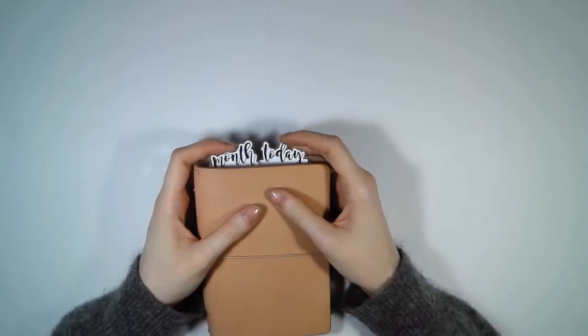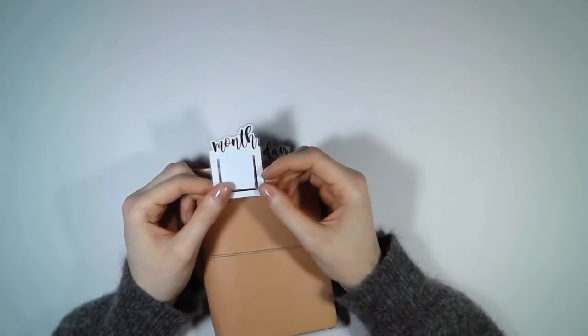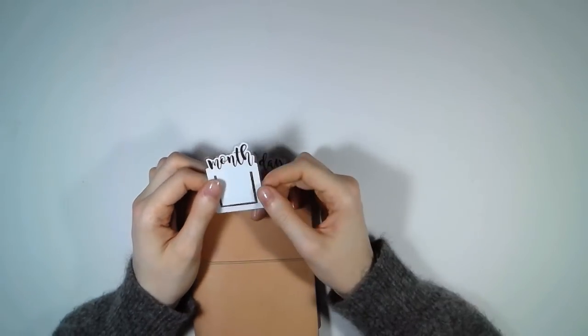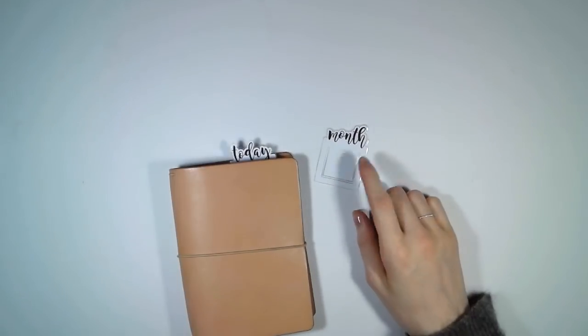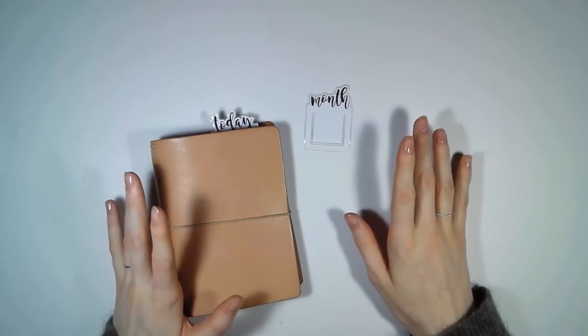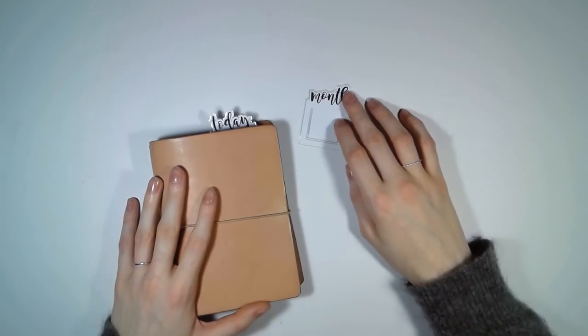The second DIY is for the tabs at the top of the traveler's notebook and I have a month and a day one. I think I'm going to make a few more with different topics because they're so convenient, you can just go straight to the page. You can download the file with the tabs in the description box down below so make sure to have a look in there.